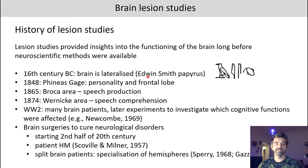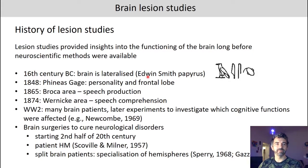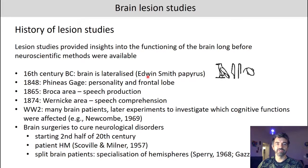Phineas Gage was perhaps the first case of brain lesion that was studied in detail. If you remember from the first session, the Edwin Smith papyrus also mentions an Egyptian battlefield surgeon who found that soldiers with injuries to the left part of their skull had their right side of the body affected. In the 19th century, another important discovery was that speech production and speech comprehension were related to different brain regions and were independent of one another.